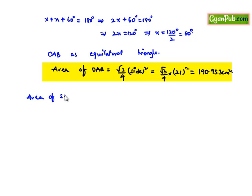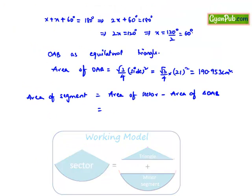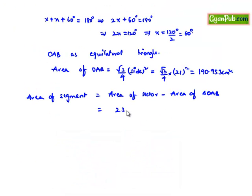Therefore, the area of the segment equals the area of the sector minus the area of triangle OAB. We have 231 cm² − 190.953 cm² = 40.047 cm².